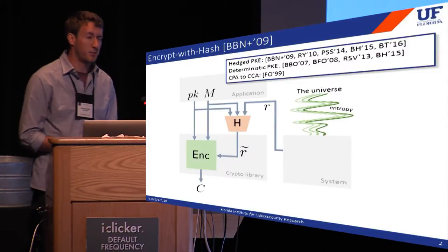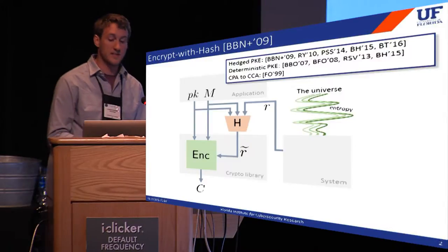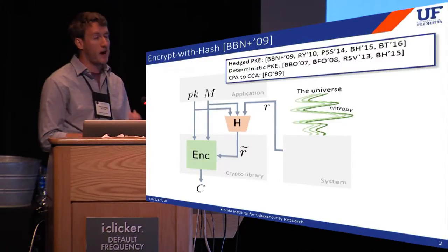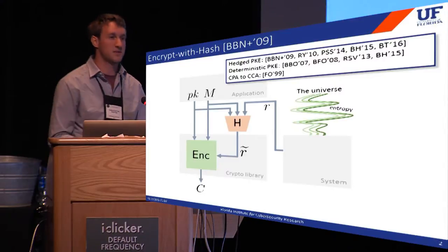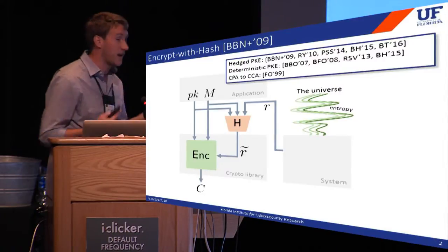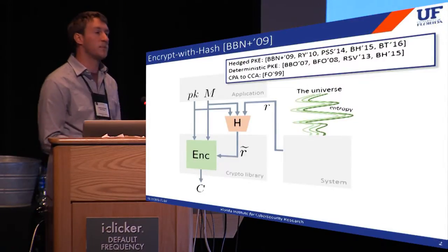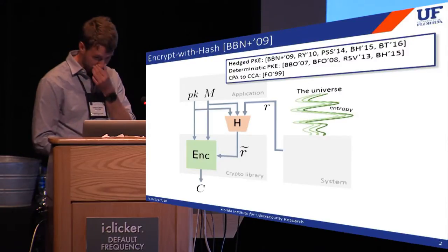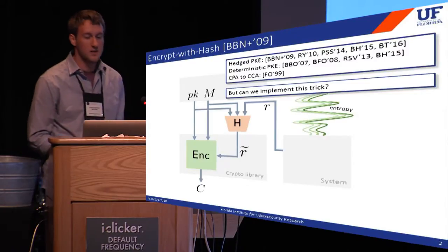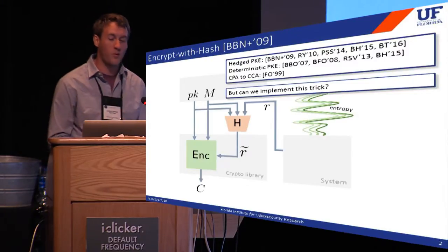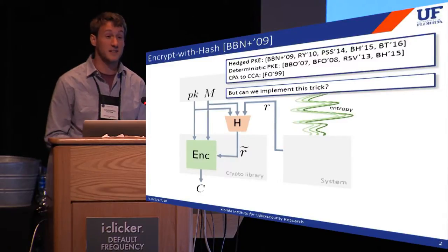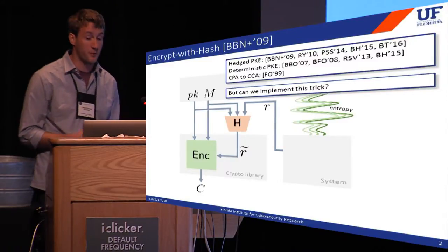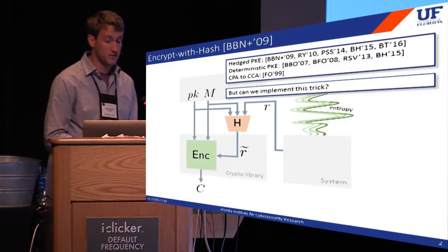There's been a lot of theoretical interest in this idea. It's explicitly designed for practice — it seems like a cheap and practical way to harden deployed crypto, because it works with any encryption scheme and you should be able to implement it without making any code changes. So the conceptual starting point for our work is a very simple question: just how easy is it to implement Encrypt with Hash with real libraries?